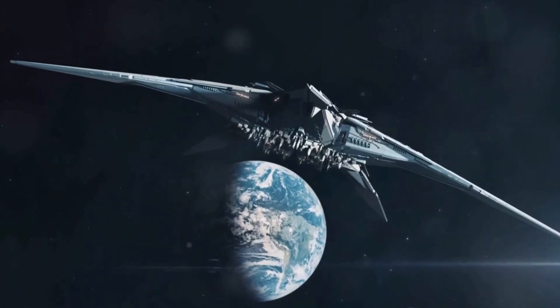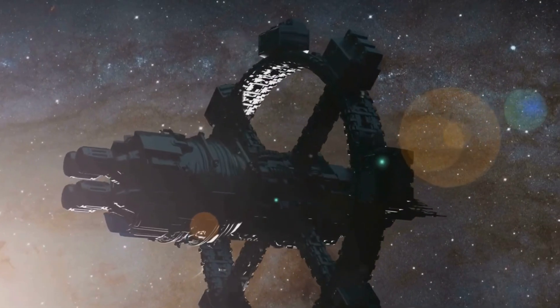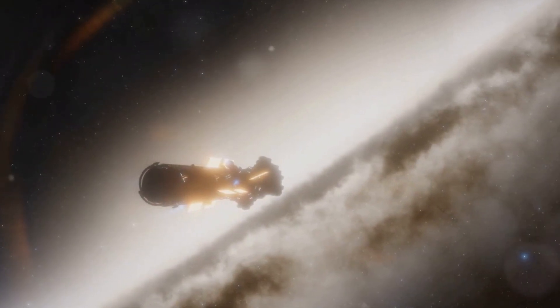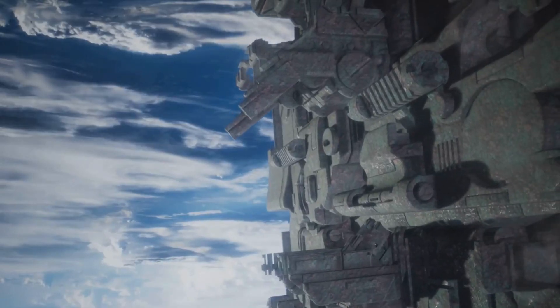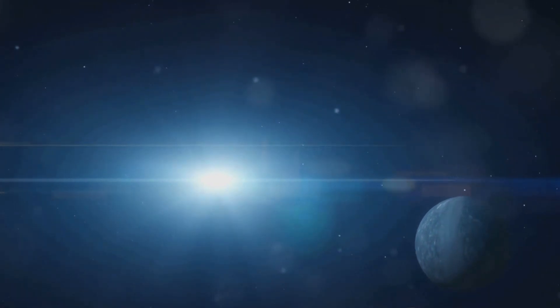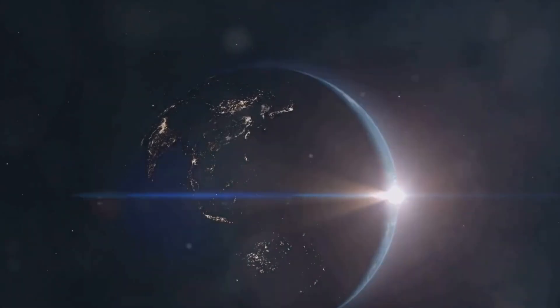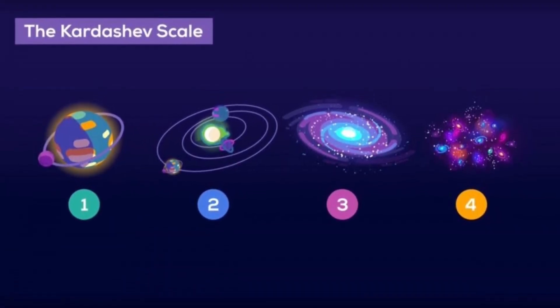But here's where things get interesting. The Kardashev scale isn't limited to these three stages. There are proposals for Type 4 and Type 5 civilizations, ones that harness the energy of multiple galaxies or even the entire universe. But what if we told you that the scale doesn't stop at Type 3? Yes, there are even speculations about civilizations that transcend our current understanding of physics, reaching into the realm of the purely theoretical. For now, let's keep our feet planted firmly in the realm of the conceivable and explore how we might progress along this fascinating scale.